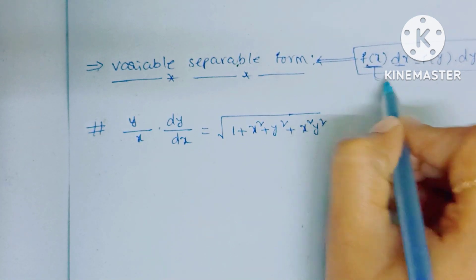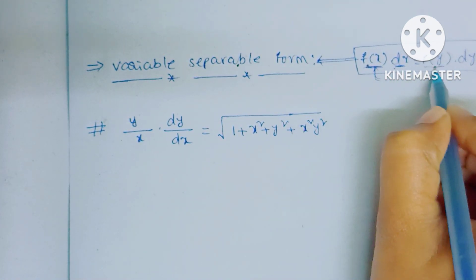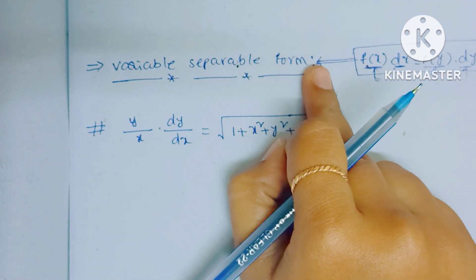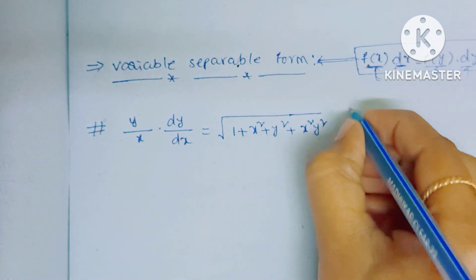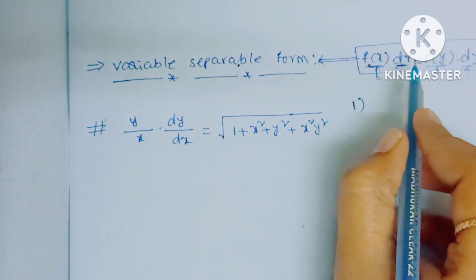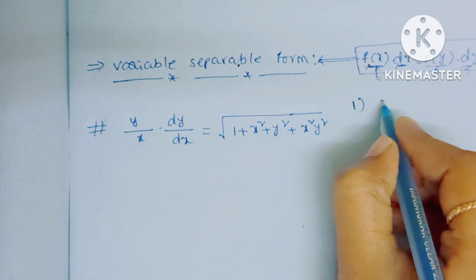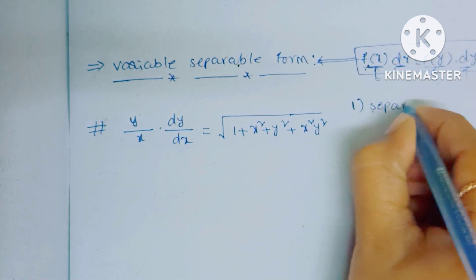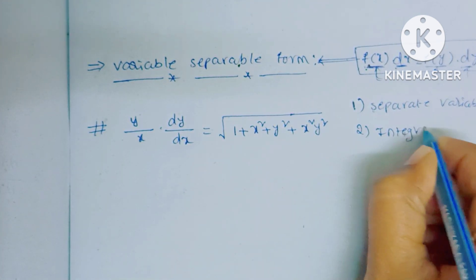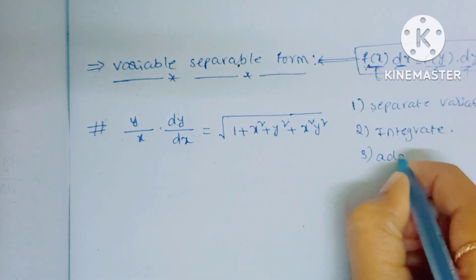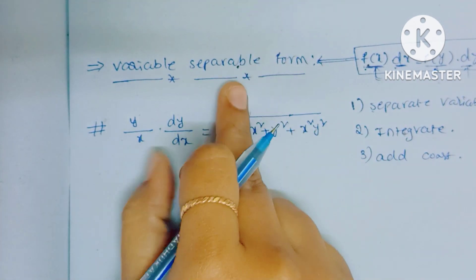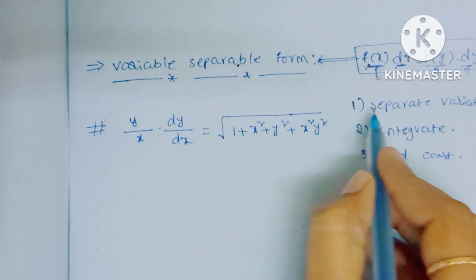When the function of x and dx is on one side and the function of y and dy is on the other side, it is called variable separable form. We solve these problems in three steps: first, separate the variables — put x and dx terms on one side and y and dy on the other; second, integrate both sides; third, add the appropriate constant.